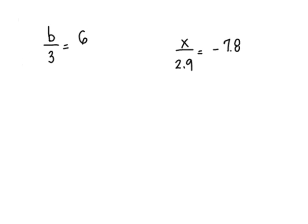Our next equation is b divided by 3 equals 6. Remember my goal is to get b by itself. To get b by itself, I have to undo divide by 3. The way you undo division is to multiply. So I'm going to multiply by 3 on the left, which means I have to multiply by 3 on the right.